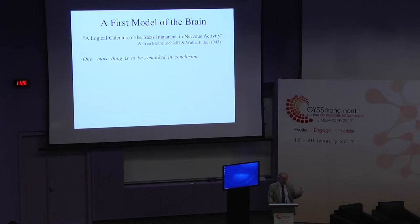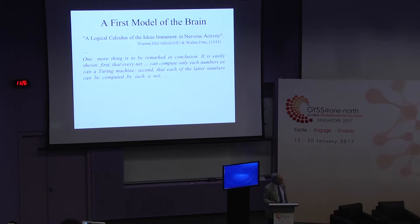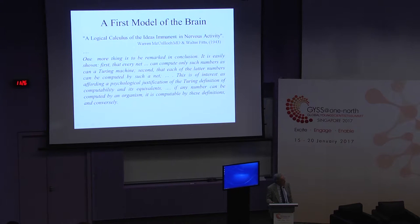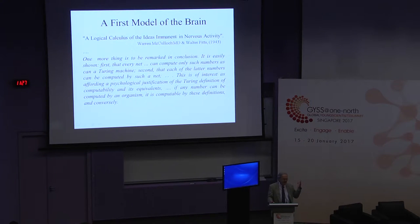What McCulloch and Pitts said was that they had a paper defining something like what we call a neural net. As a comment at the end, they noted it's easily shown, first, that every net can compute only such numbers as a Turing machine, and second, that each of the latter numbers can be computed by such a net. So basically they showed that their mechanism was exactly the same as Turing's mechanism. This affords a psychological justification of the Turing definition of computability: any number that can be computed by an organism is computable by these definitions, and conversely.